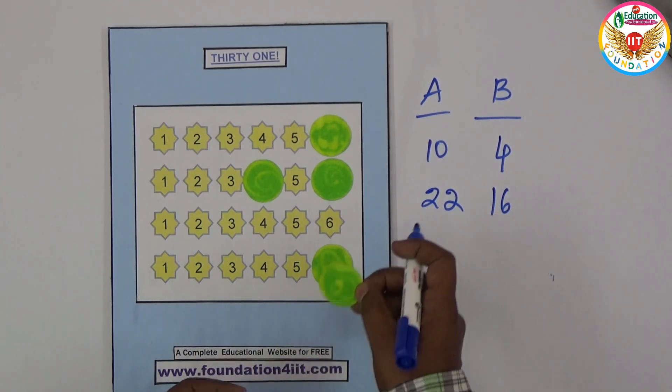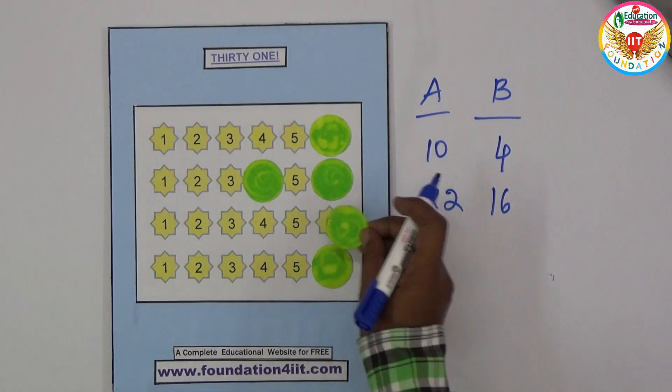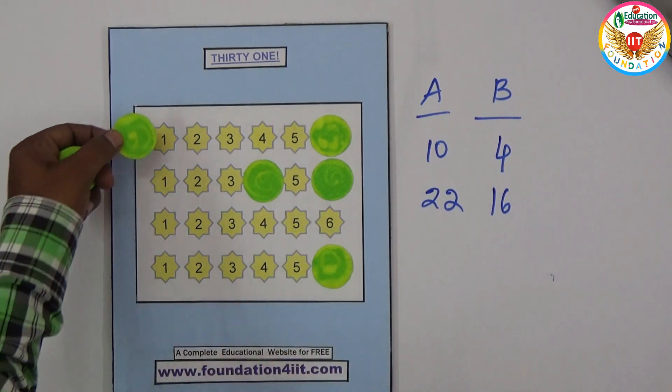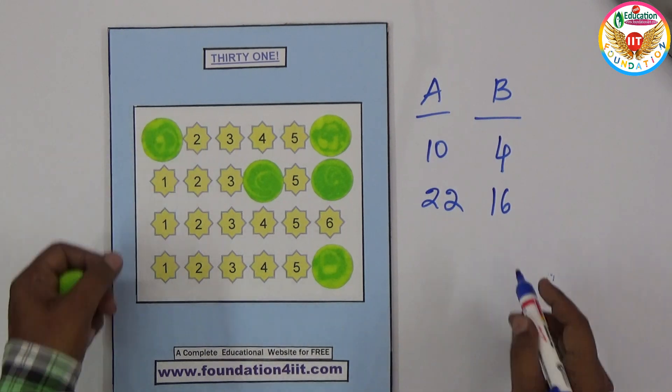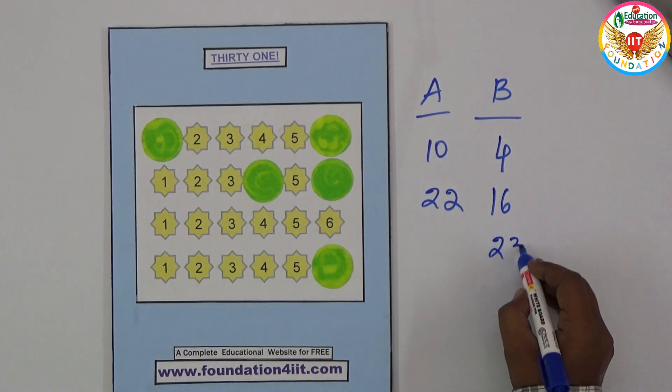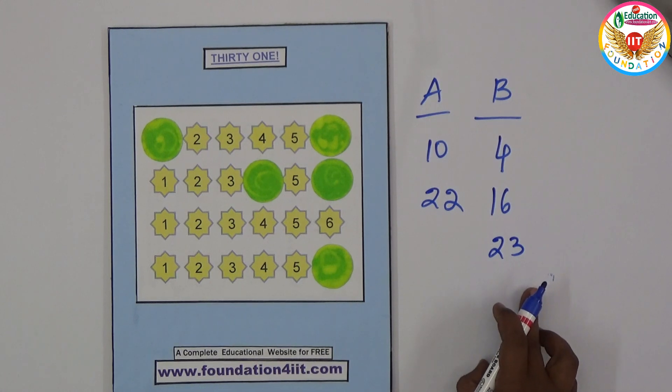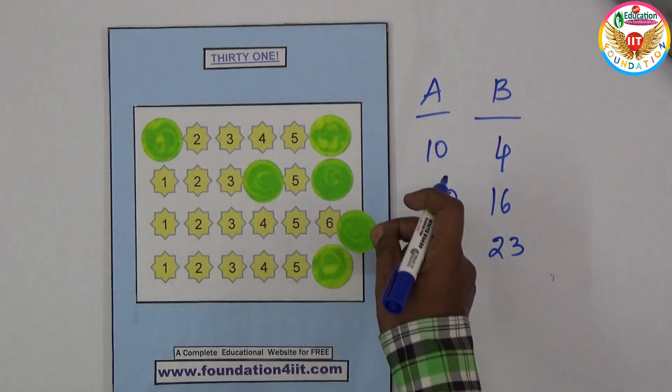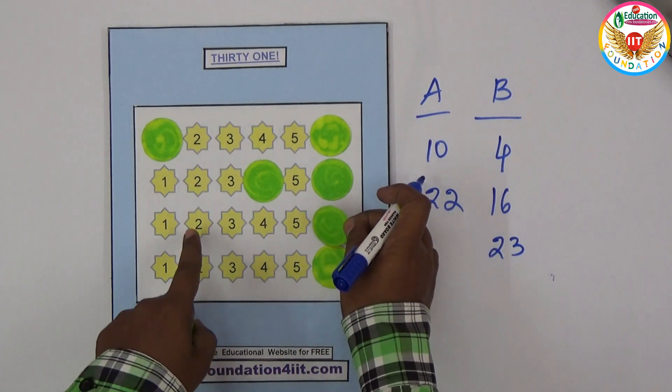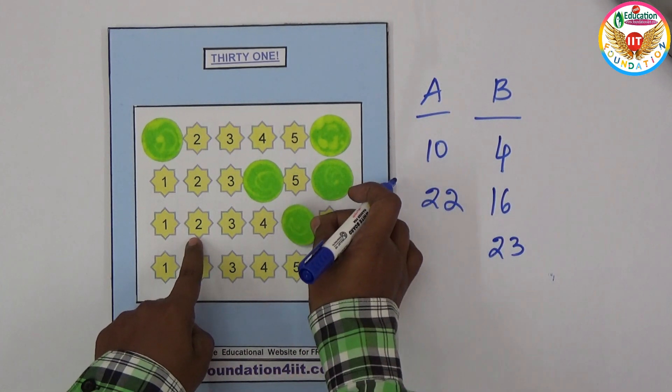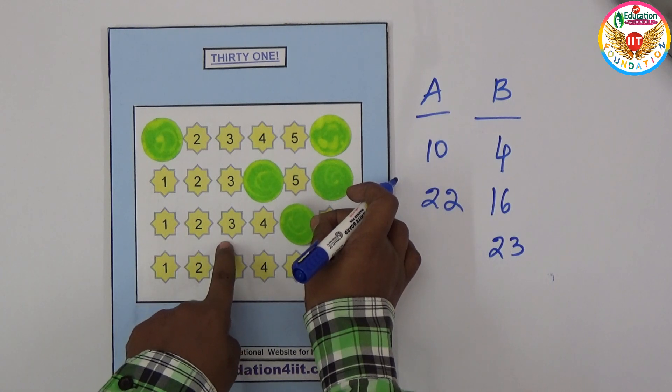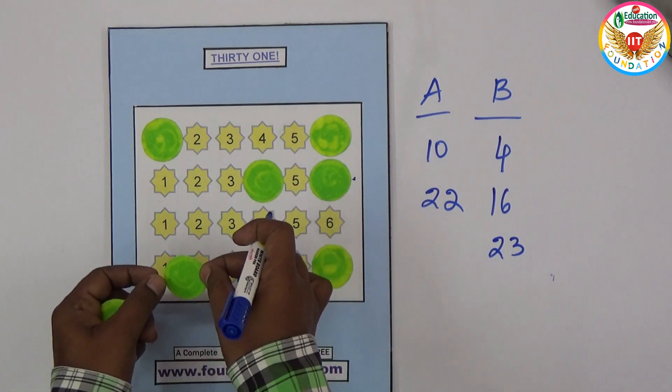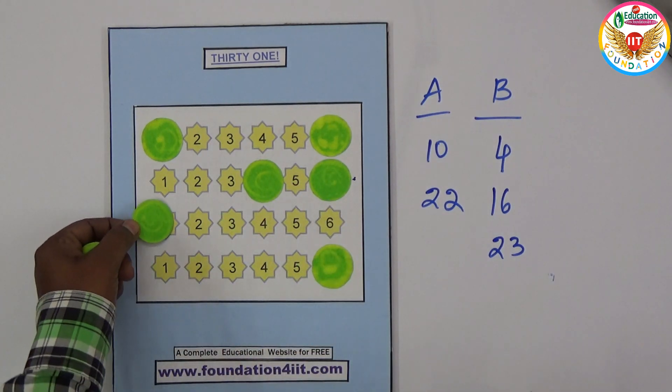If you keep again at 6, 16 plus 6 is 22. If B keeps 6, it automatically becomes 28. Next A can keep anywhere in this place. That's why B should think - if B keeps 1, 22 plus 1 is 23. More 8 we require to get 31, so 8 chance is not there. B kept 2, making 25.